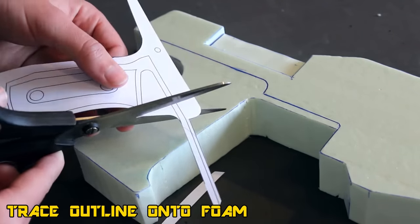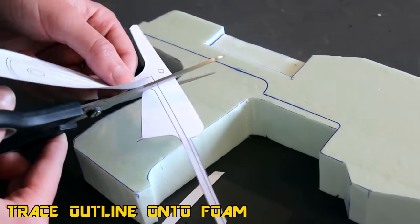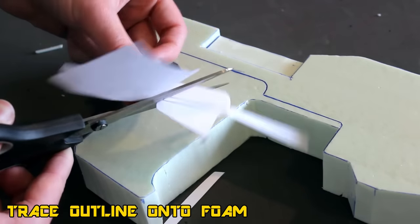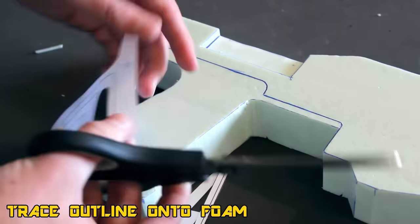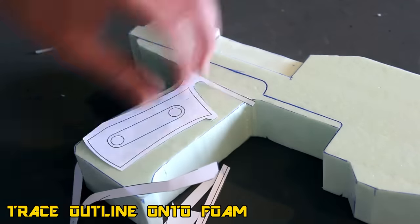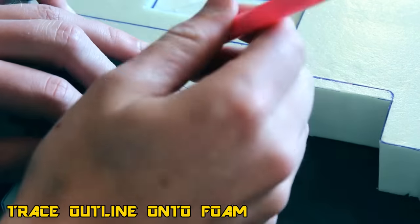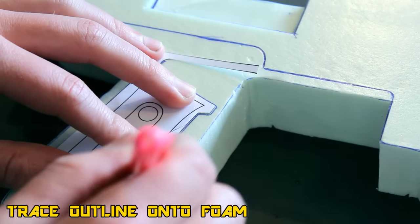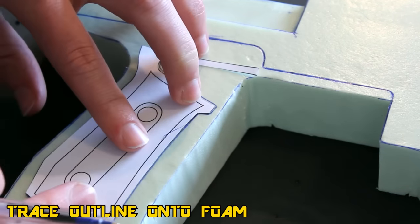Now we can start cutting out the handle a bit further. We're going to get the centerpiece of the handle, the main grip, and we're going to start templating that onto the foam as well so we can really start adding some levels and depth and give it a raised effect so it's a bit more 3D.